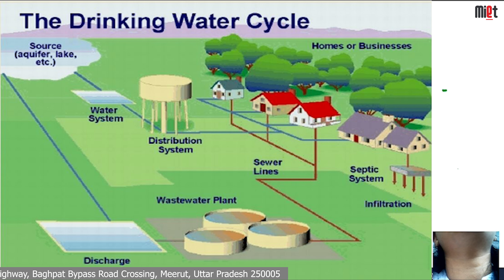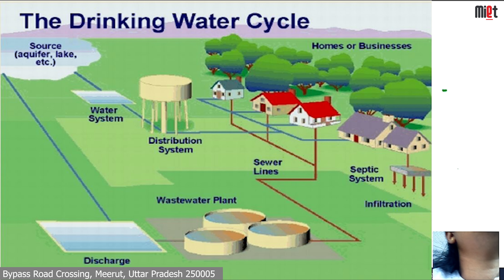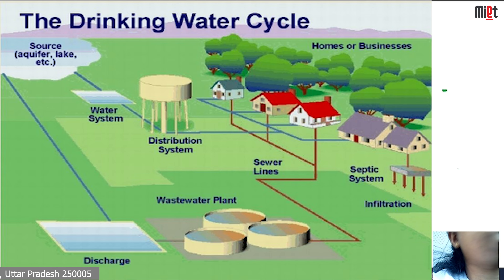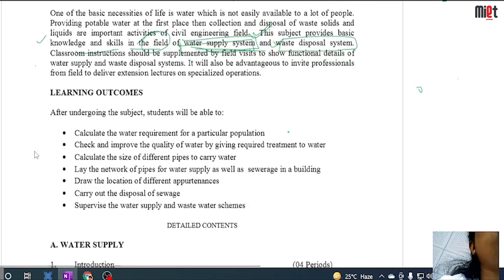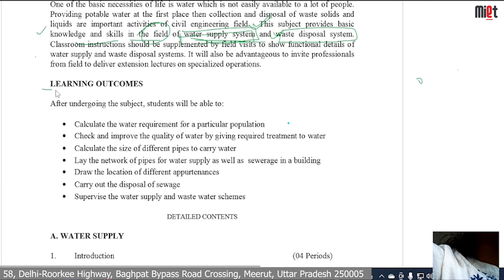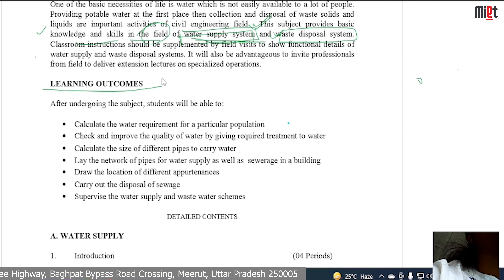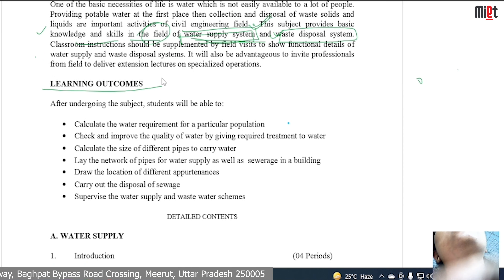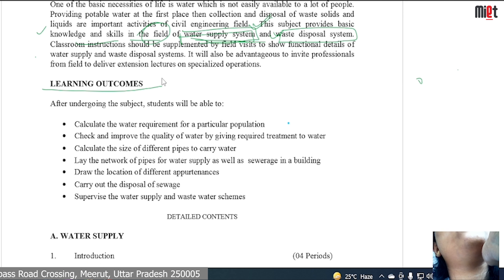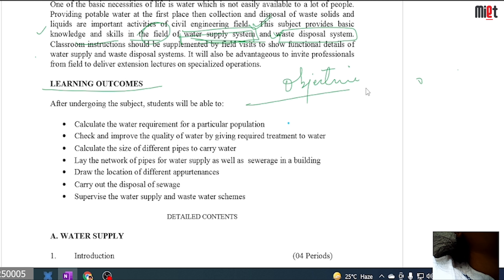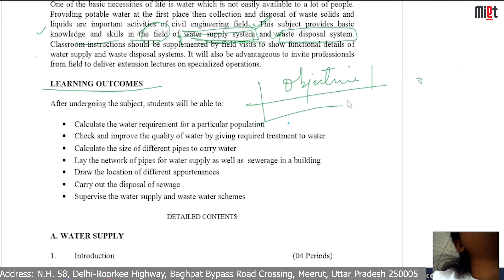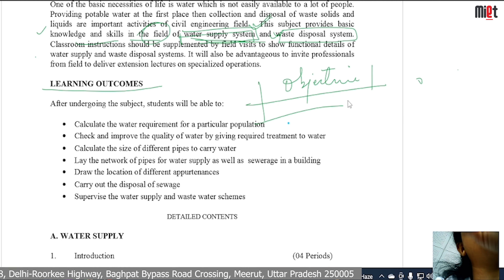We will learn in which way we will reach the water, in what quality, and how we will create the disposal system. Now we will look at the learning outcomes. Before reading any subject, if we don't understand the objectives, we are not going to be able to create, develop, or analyze anything.